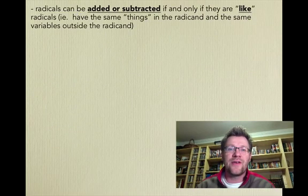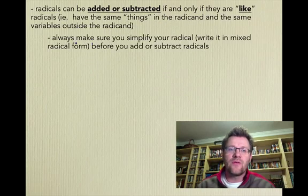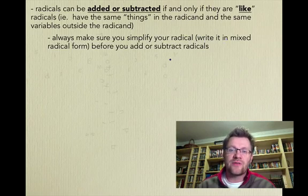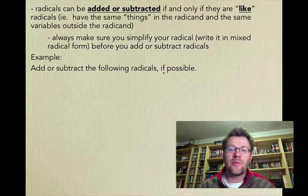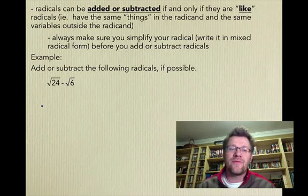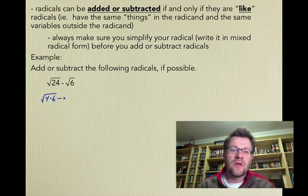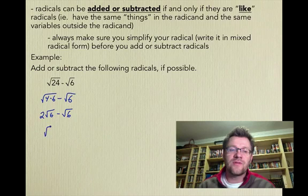So radicals can be added or subtracted if and only if they are like radicals. For example, they need to have the same things in the radicand and the same variables outside the radicand. So always make sure you simplify your radical first, write it in mixed form, before you add or subtract radicals. Here's our example. It says add or subtract the following radicals if possible. √24 minus √6. Well, right now, these two things are not like radicals, but we can simplify √24. That's the same thing as saying 4 times 6. And so the square root of 4 is 2, so we get 2√6 minus √6. So if we had 2 root 6's and we took 1 root 6 away, we just end up with 1 root 6.